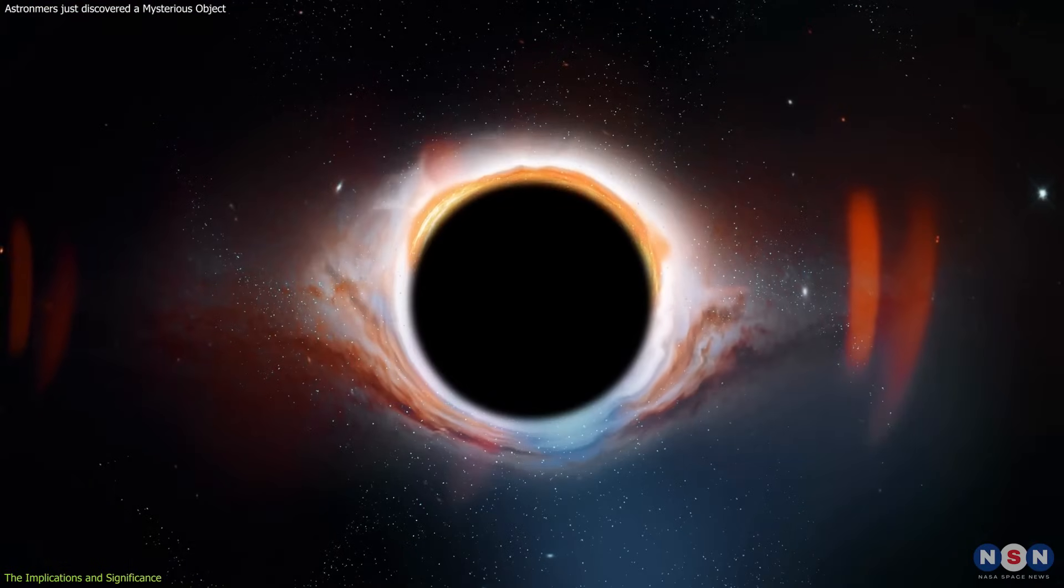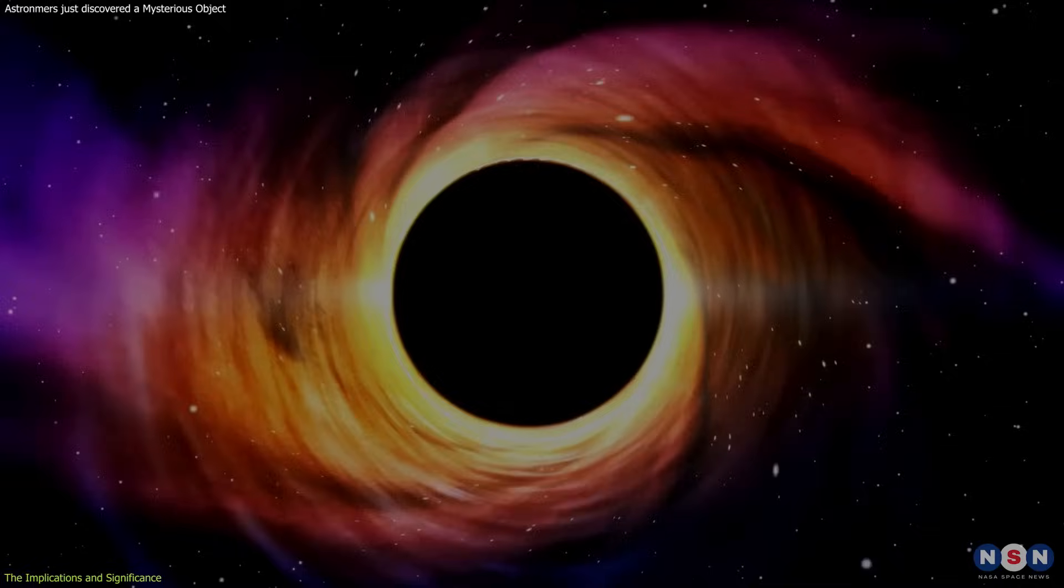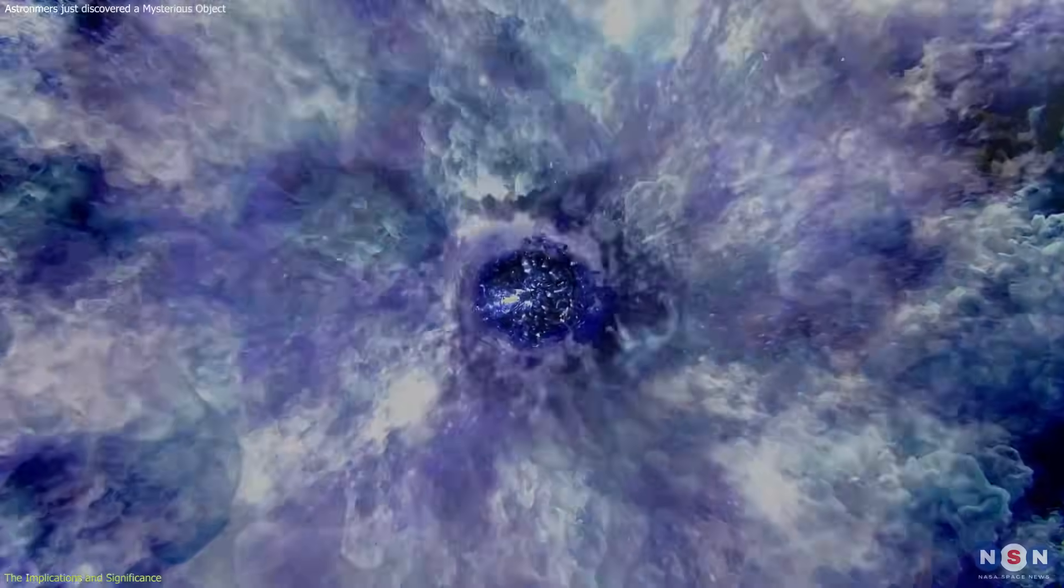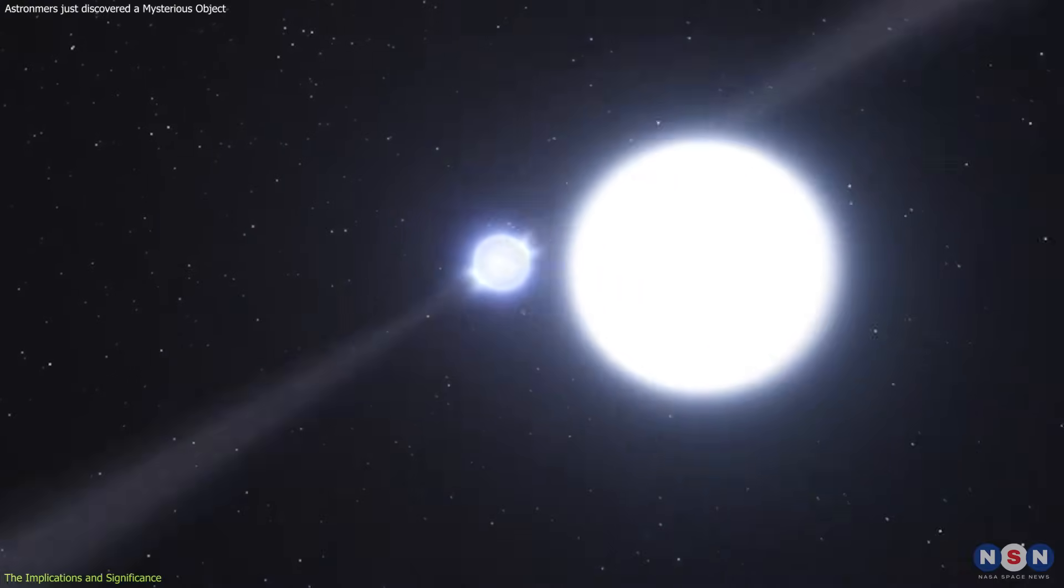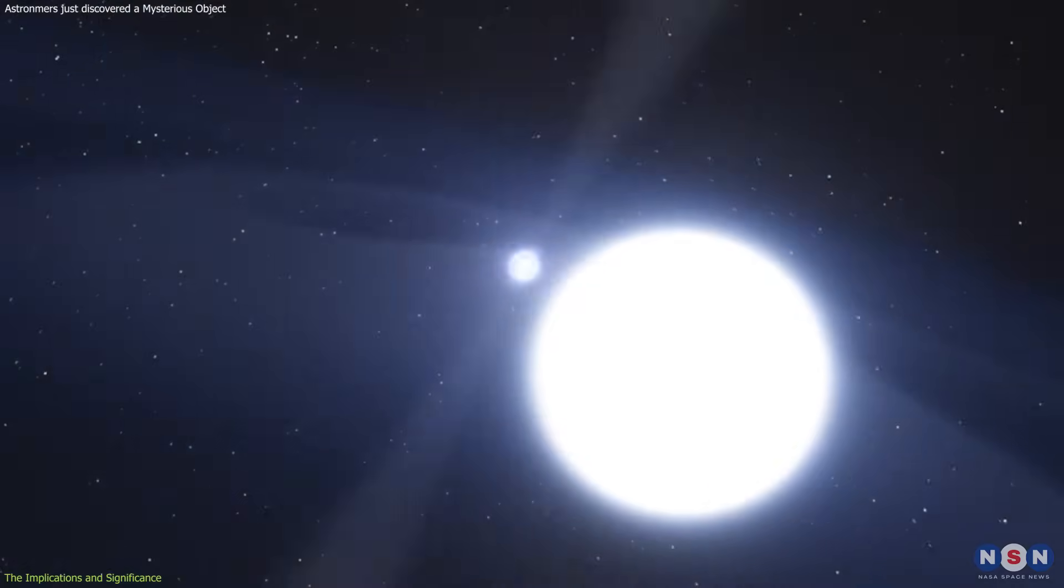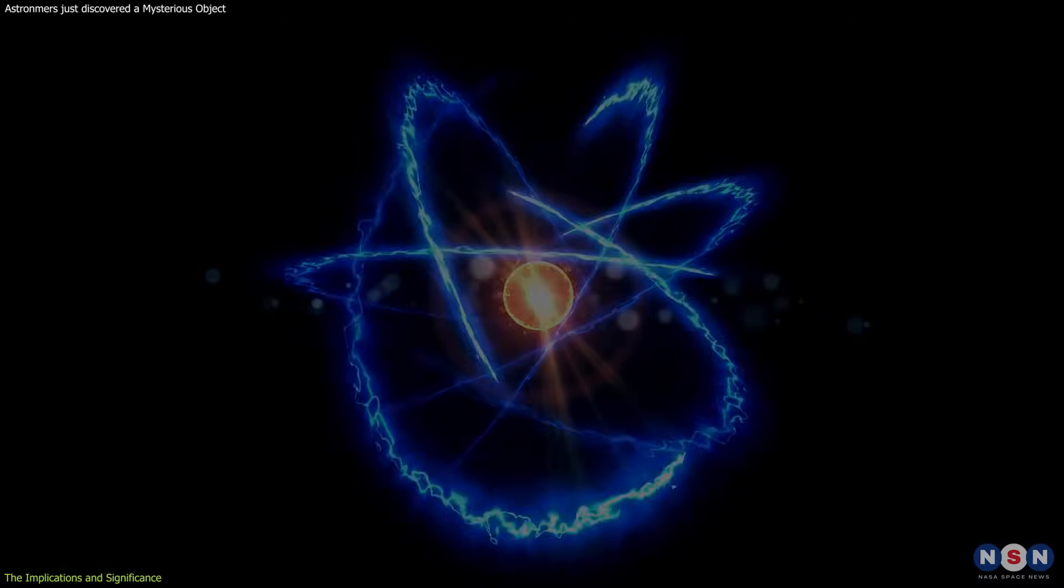If the mystery object is a black hole, it could help us better understand the formation and growth of black holes, and the transition from neutron stars to black holes. It could also be used as a probe for studying the effects of strong gravity and spacetime curvature, and the possible violations of general relativity and quantum mechanics.